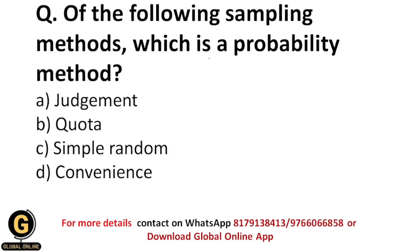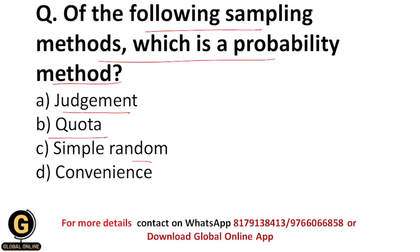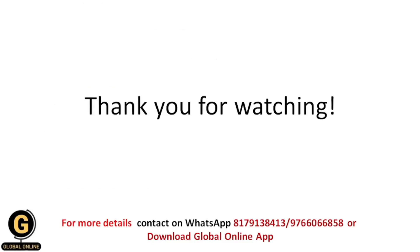Today's MCQ question is: of the following sampling methods, which is a probability method? The options are: judgment method, quota method, simple random, and convenience. Answer this question through the comments. Thank you for watching this video. If you like my video, please hit the like button and subscribe to our channel.